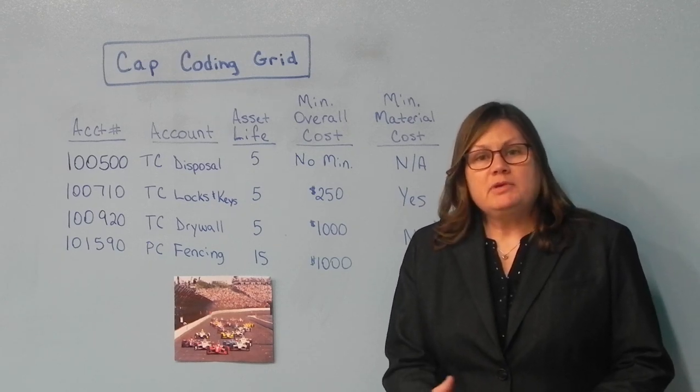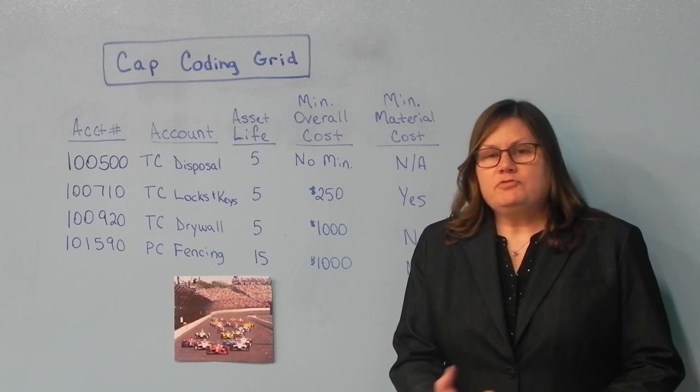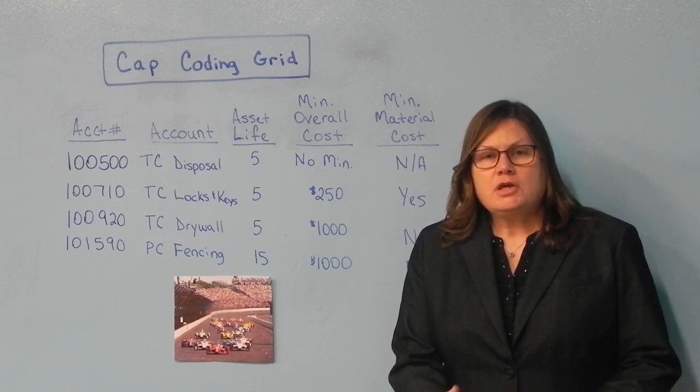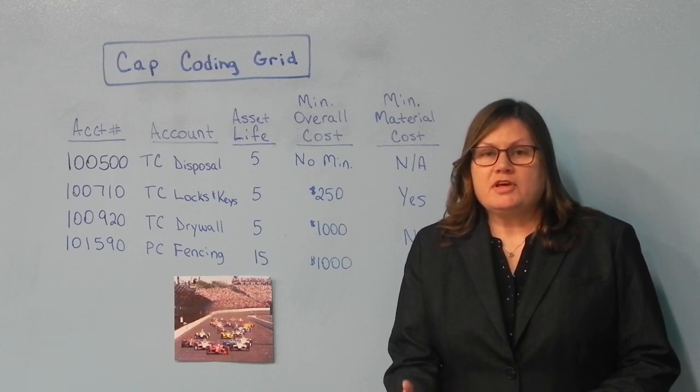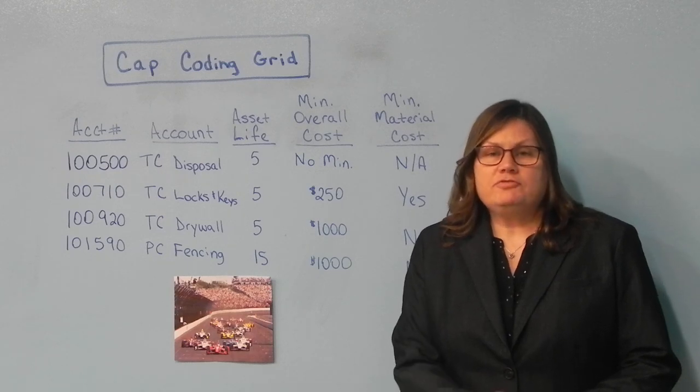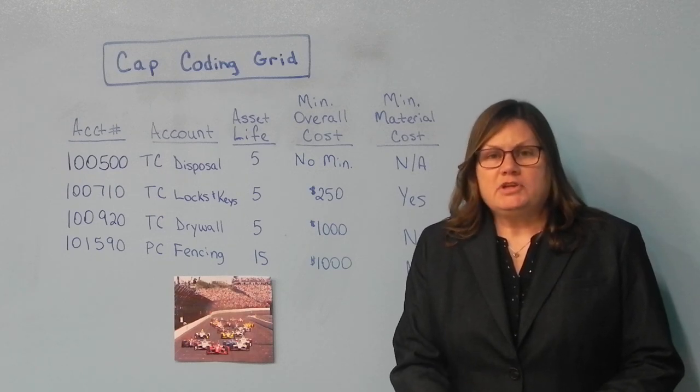One example of that would be a fence. If you replace a section of fence for $2,000, it meets the other requirements. But if you're going to replace that entire fence in three years, then that isn't going to last the 15 years needed, and so that would need to be an expense.